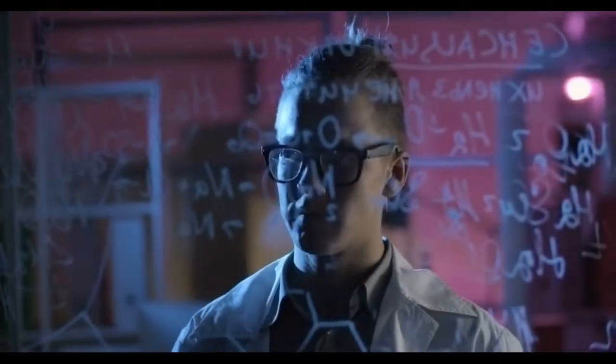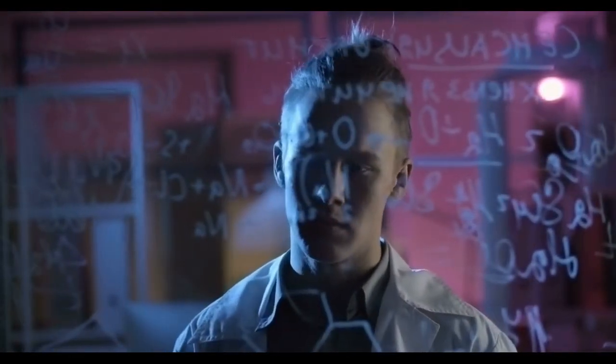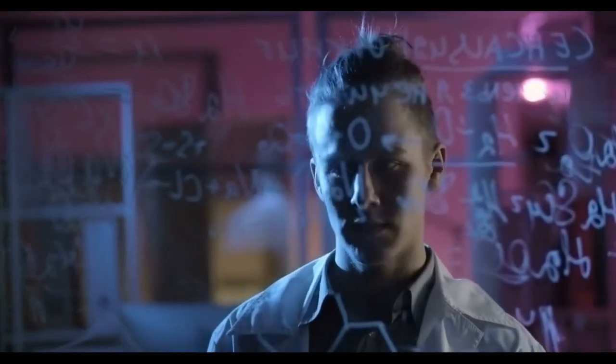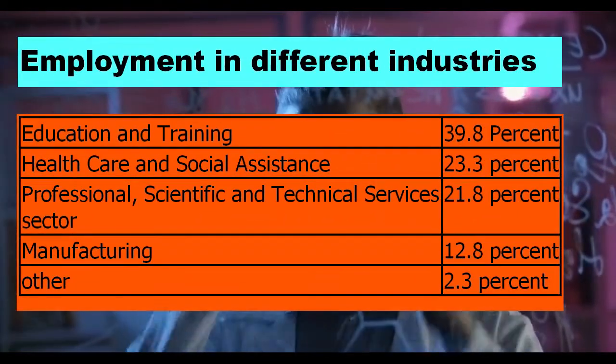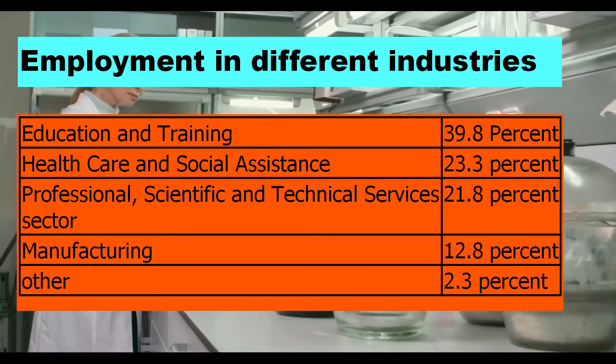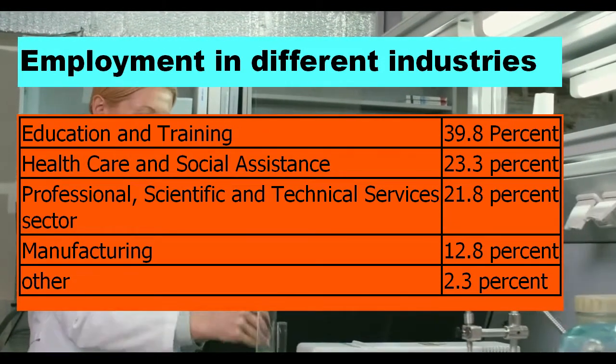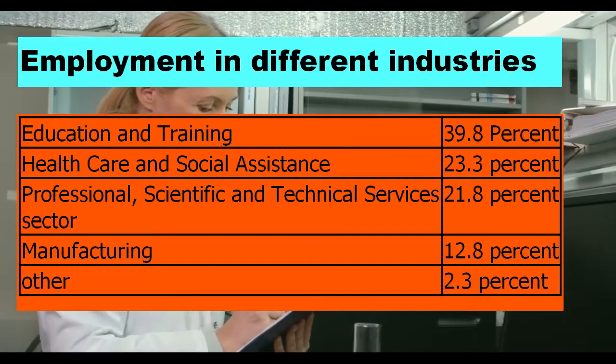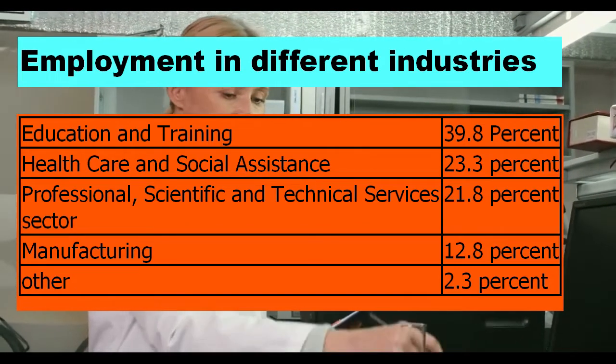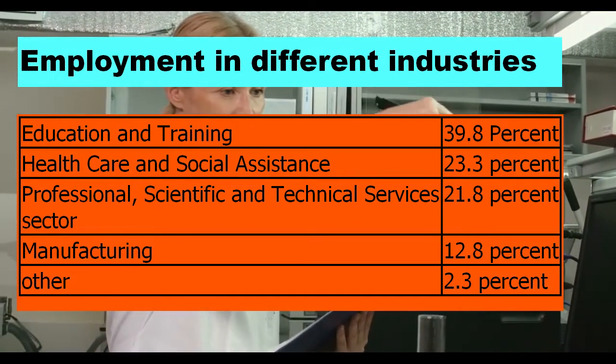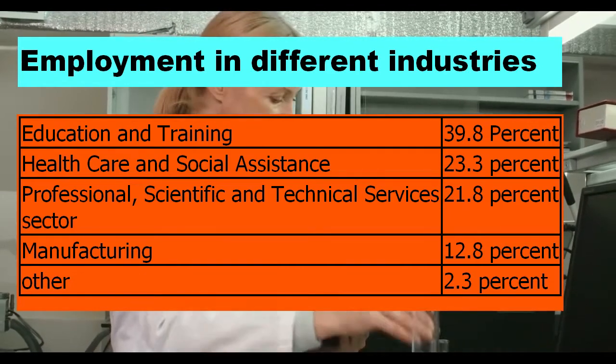Now let's move on and talk about the percentage of biochemists employed in different industries in Australia. 39.8% of the biochemists are employed in education and training, 23.3% in healthcare and social assistance, 21.8% in professional, scientific and technical services sector, 12.8% in manufacturing and 2.3% in other industries.